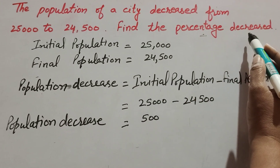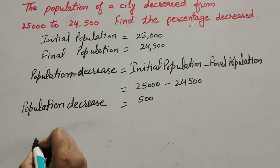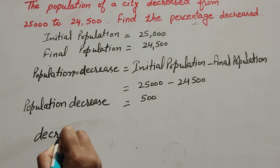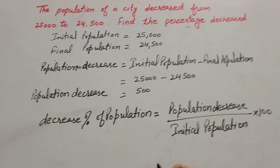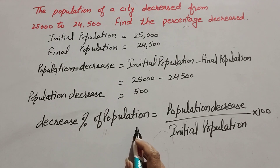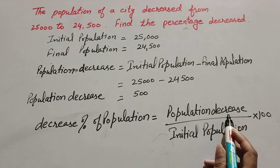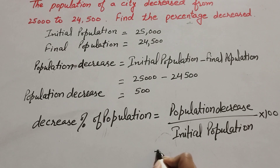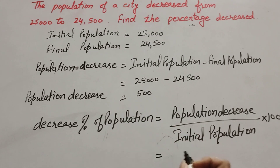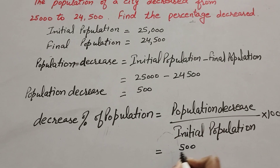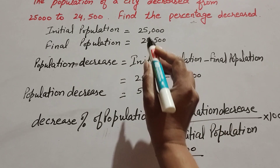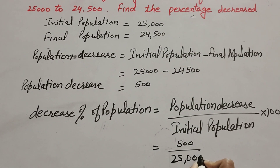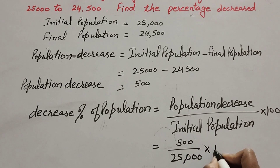Now we find the percentage decrease. Percentage of population decrease equals population decrease over initial population, multiplied by 100. Population decrease is equal to 500, over initial population 25,000, multiplied by 100.